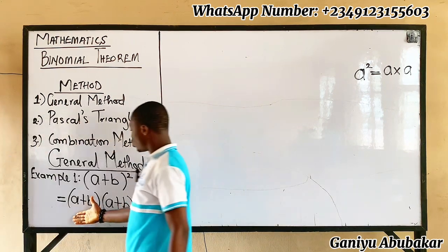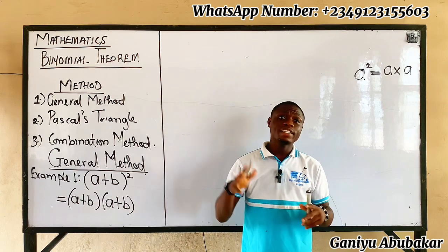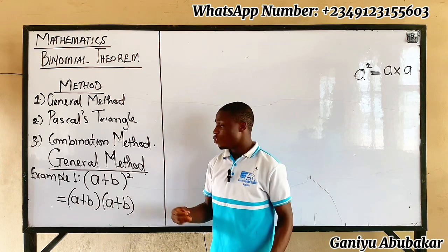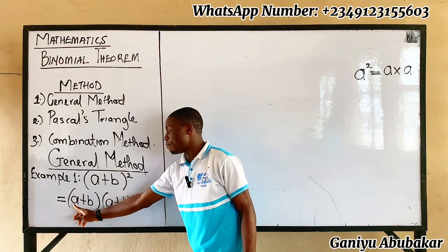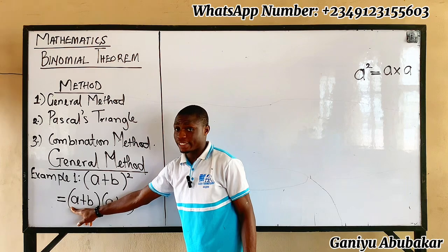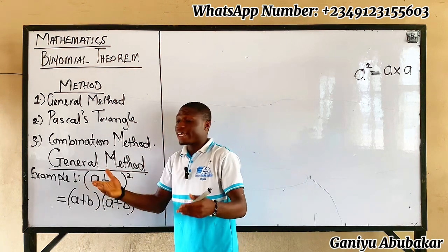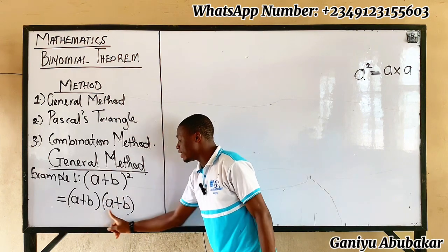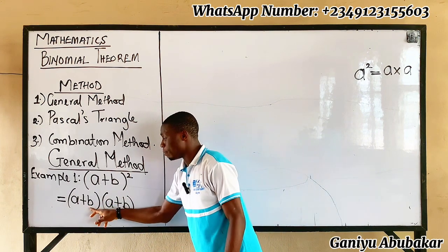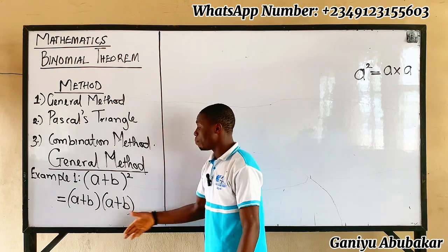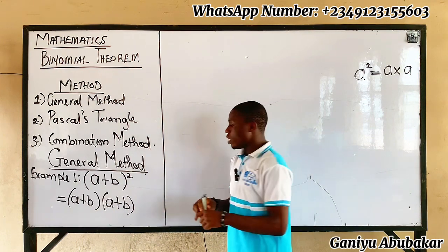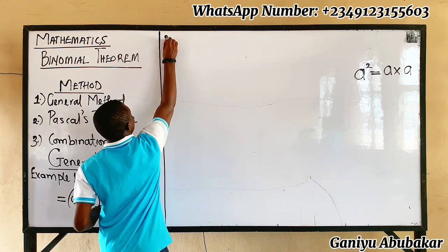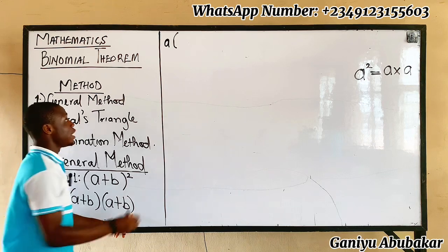So how do you expand these two brackets? To expand them, the key tactic is: multiply the first term in the first bracket by everything in the second bracket. Pick out the first term, which is a, into everything here — that's a plus b.